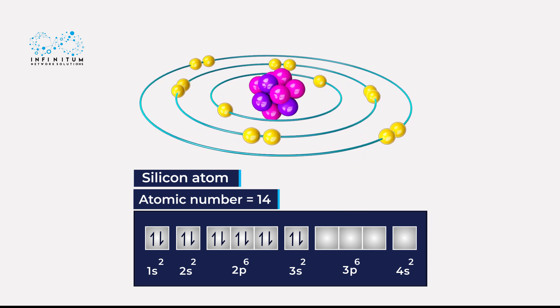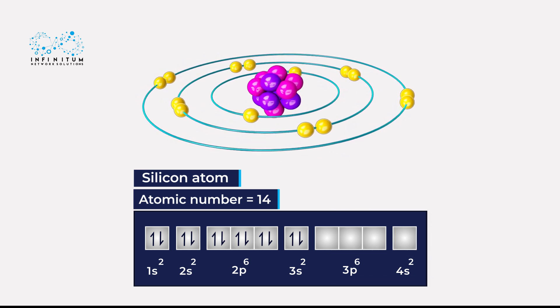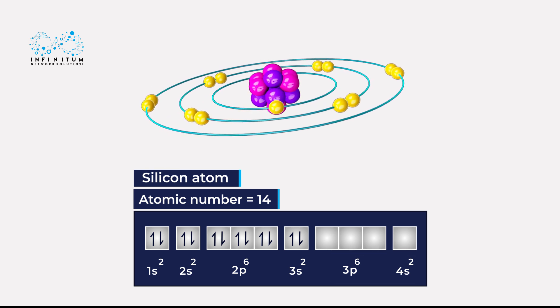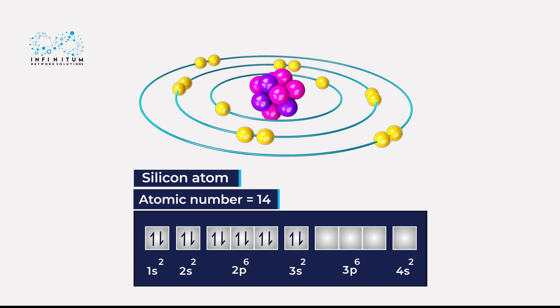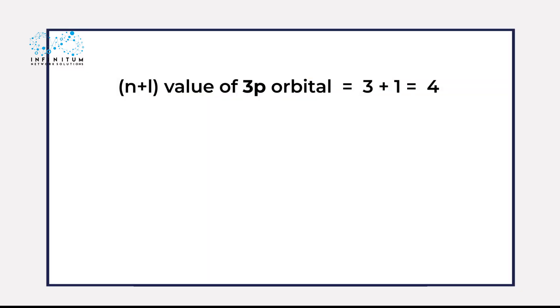Now, the last two electrons can enter into the 3p or 4s orbital. The n plus l values of these orbitals are the same. That is to say, the 3p orbital has n plus l value of 3 plus 1 equals 4, and 4s has an n plus l value of 4 plus 0 equals 4.